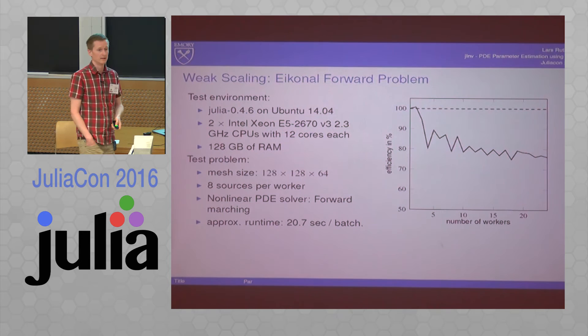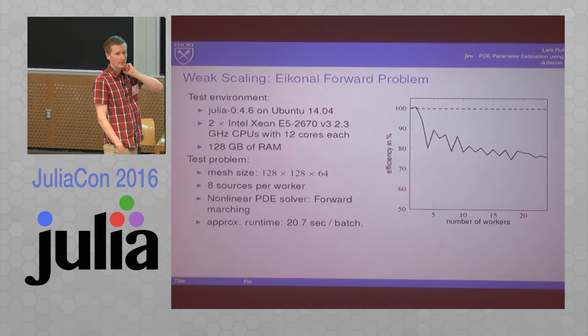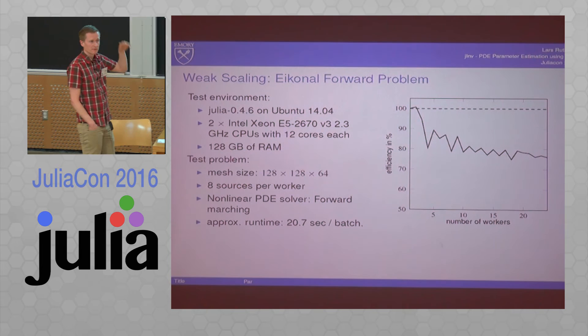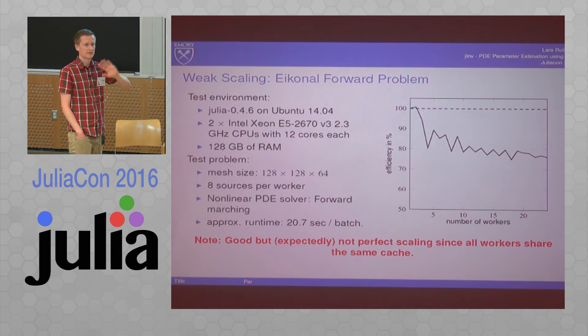So how does it scale? This is scaling here on a shared memory machine using a non-linear PDE. So this is the iconic PDE. You see that up to like 24 workers, which is the number of cores here, we get some reasonable scaling, like 70% weak scaling efficiency. That's pretty good, I'd say. They all share the same cache, so at some point you would expect the efficiency to go down. But that's a pretty good run, I think.